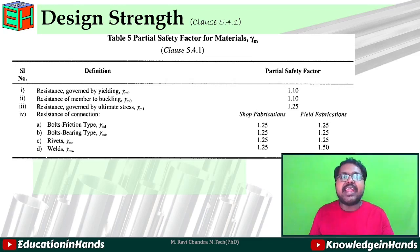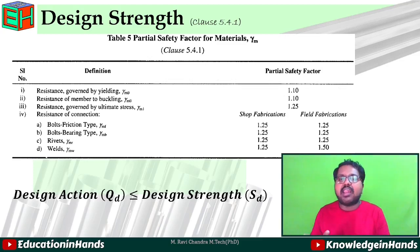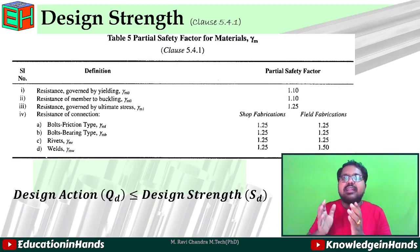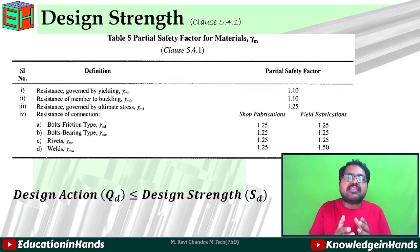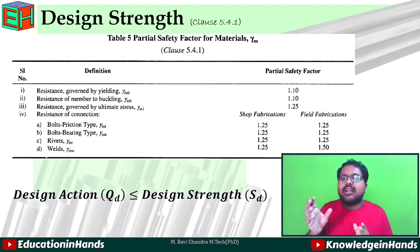To check the adequacy of the design, we must calculate the values of design action and design strength, then verify that design actions are always less than or equal to design strength. Only then will the structure withstand the design loads. If the material strength is less than the applied external load or action, the material will fail, leading to total failure of the structure.